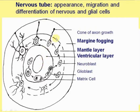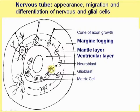The neural tube initially consists of three layers around the primary canal. The ventricular layer is where matrix cells proliferate intensively, and daughter cells move to the mantle layer, where they convert to two types of cells: neuroblasts, which will differentiate to neurons, and glioblasts, which will differentiate to glial cells.